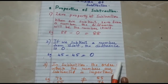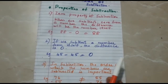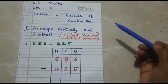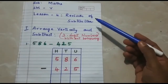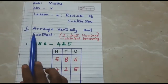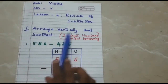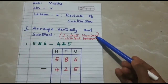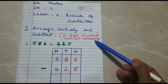So these properties you should keep in mind. Now students, let us begin with our revision of subtraction. Our first subtopic is arrange vertically and subtract. Here I have taken 3-digit numbers without borrowing.